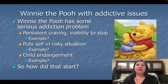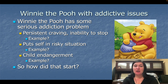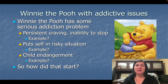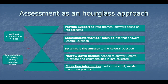An example would be Winnie the Pooh with an addictive disorder. Winnie the Pooh has some serious addiction problems with honey — persistent cravings and inability to stop. He climbs on top of a tree and can't stop himself from eating all the honey. He puts himself in risky situations, even putting Christopher Roberts in danger. So how did that start?